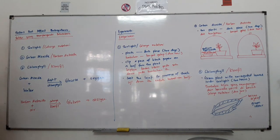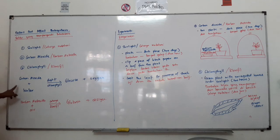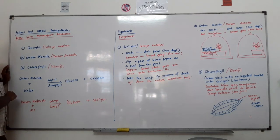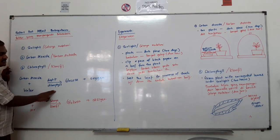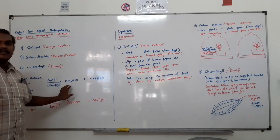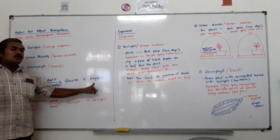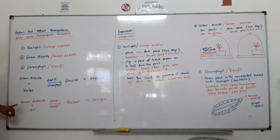This is the photosynthesis equation. You will have carbon dioxide together with water. Plants get carbon dioxide from the atmosphere through the stomata, located at the lower epidermis of the leaf. Water is absorbed from the soil by the roots. Light energy and chlorophyll are also needed. Through photosynthesis, plants produce glucose — the food made by green plants — and oxygen as a by-product.